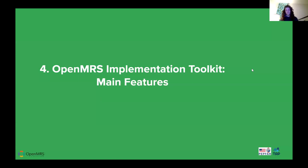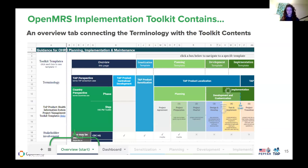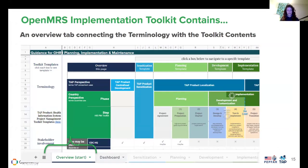Let's go through the main features of the toolkit. You're looking at a spreadsheet with different tabs at the bottom. The first is an overview tab connecting the terminology with the toolkit contents. There are lots of different terms very specific to this toolkit, and this first page will try to get you oriented to the different phases and vocabulary used.